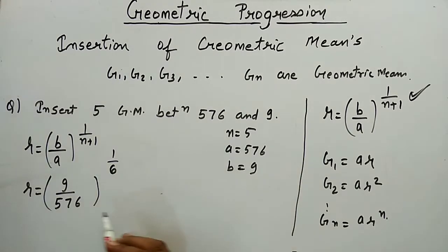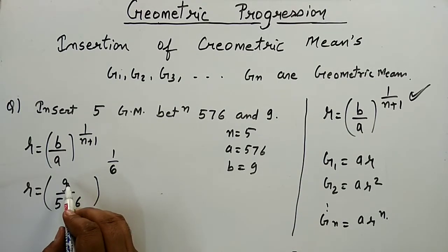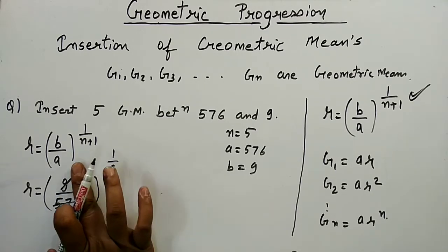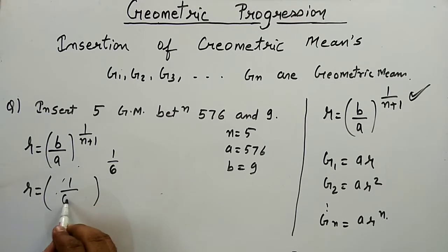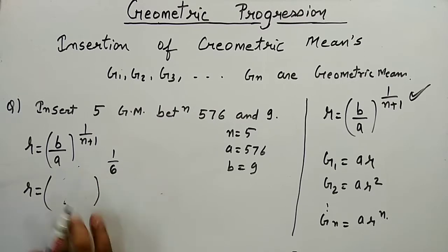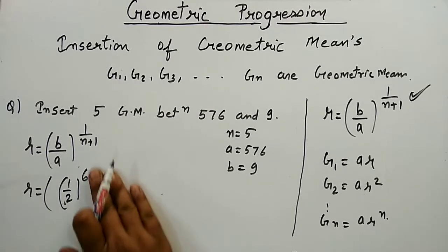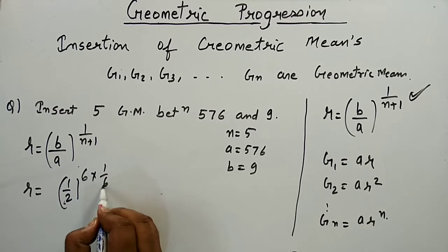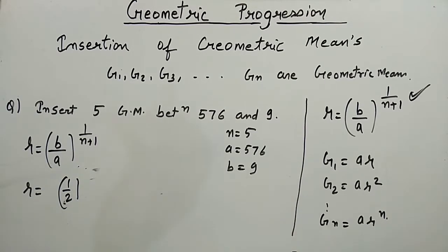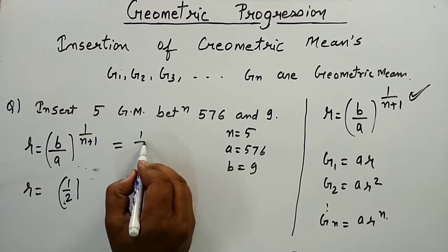Simplifying 9/576 gives 1/64, which can be written as 1 over 2 to the power 6. Raising this to the power 1/6, the 6s cancel, giving a common ratio of 1/2.